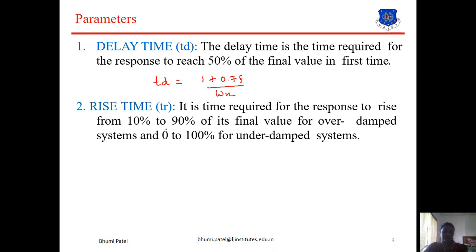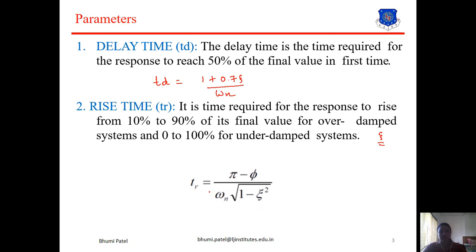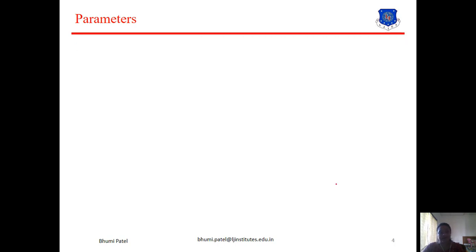Next is the rise time Tr. It is the time required for the response to rise from 10% to 90% of its final value for an overdamped system, and from 0% to 100% for an underdamped system. Whether the system is overdamped or underdamped depends on the value of zeta, which we study in the second order system derivation. The equation for rise time is: Tr = (π − φ) / (ωn × √(1 − ζ²)), where φ = tan⁻¹(√(1 − ζ²) / ζ).